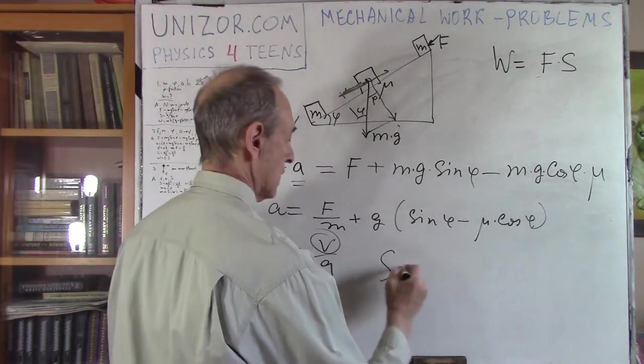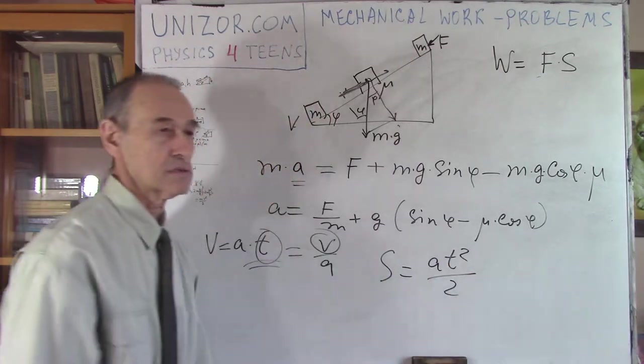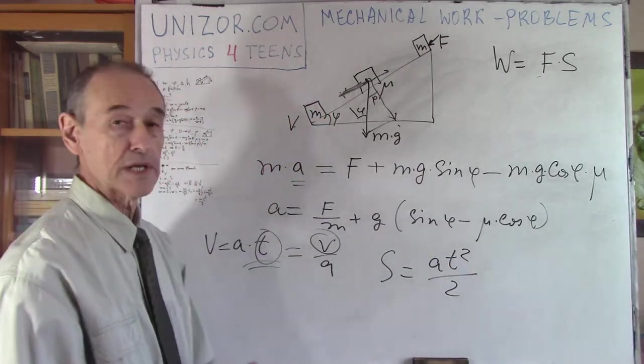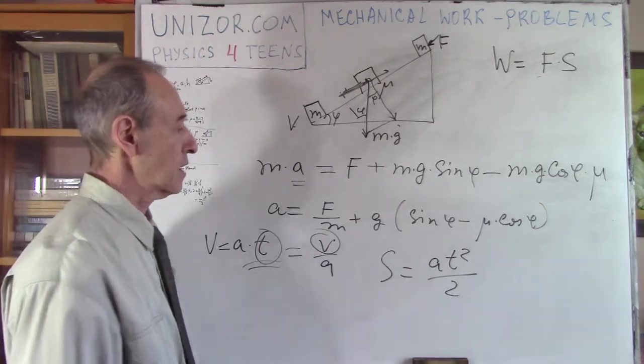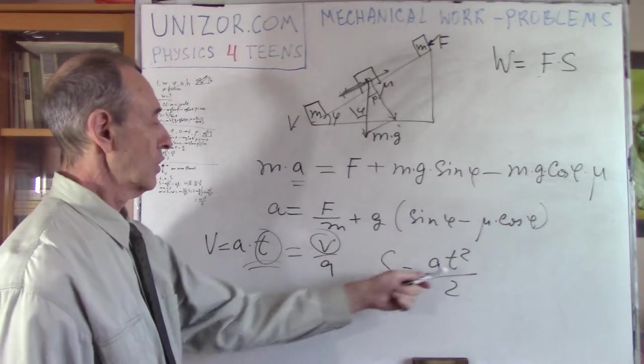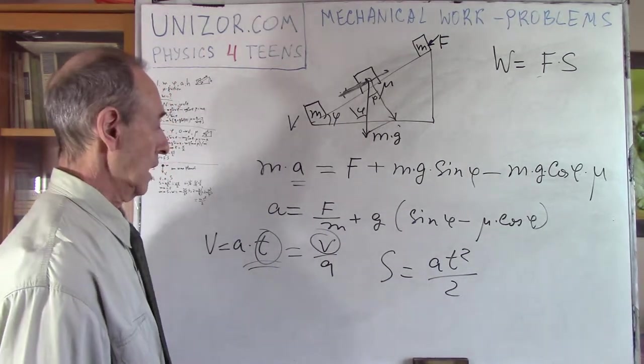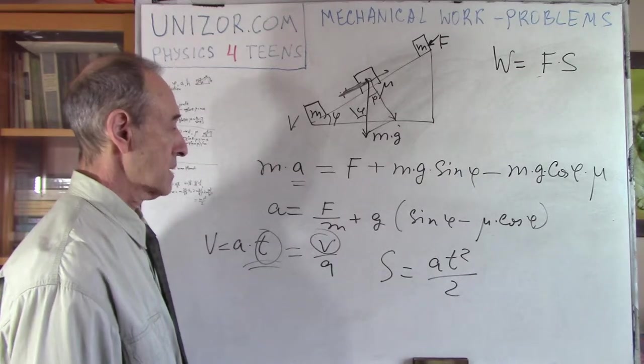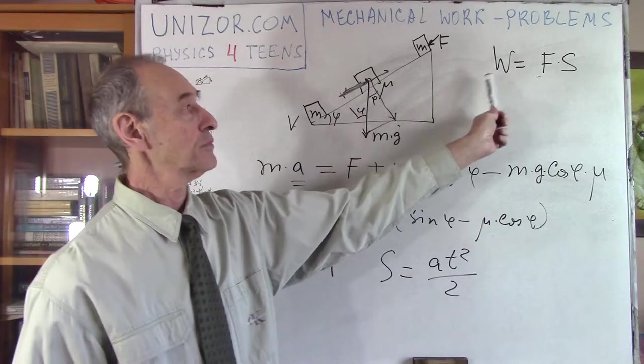And now, s is equal to a t squared over 2. This is the standard formula of kinematics of the movement with a constant acceleration in the time. We know a, we know t. So, basically, we know everything. And that gives you the s. And knowing f, you have the work.